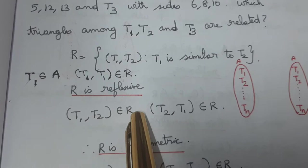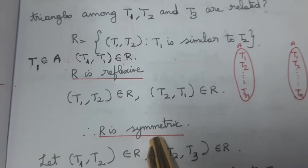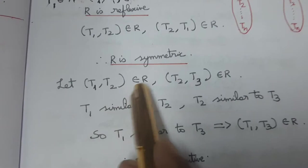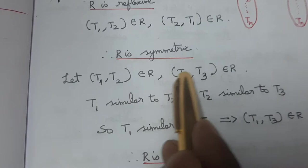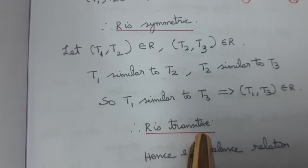For symmetry: (T1, T1) belongs to R, so R is symmetric. For transitivity: if triangle 1 is similar to triangle 2, and triangle 2 is similar to triangle 3, then triangle 1 is similar to triangle 3, so (T1, T3) belongs to R. R is transitive. Therefore R is an equivalence relation.